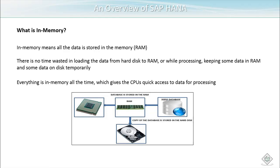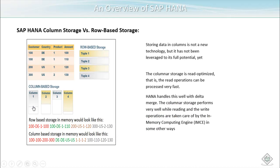Here we can see that the database is stored in the RAM. This is the RAM, this is the HANA database, and this is the traditional database. Basically, a copy of the database is stored on the hard disk, but most of the data is stored in RAM itself, so calculations and everything are very fast because we have everything in memory.